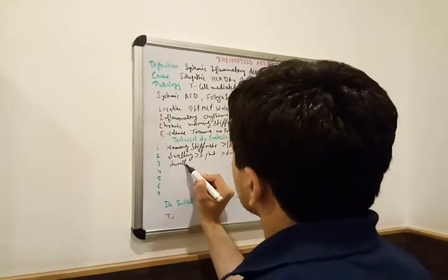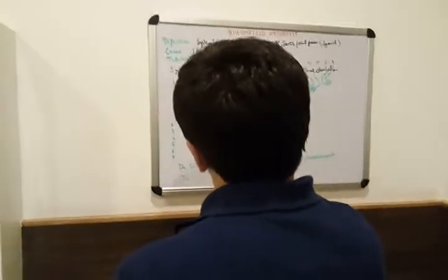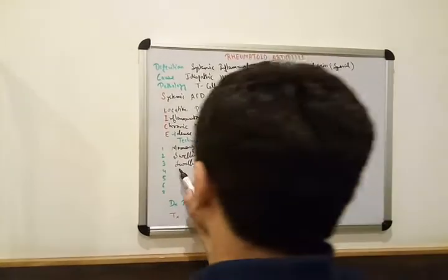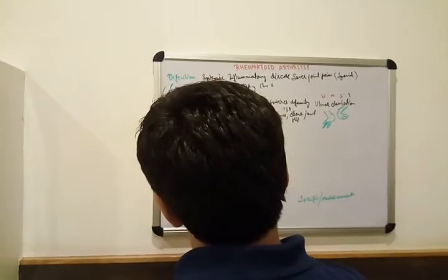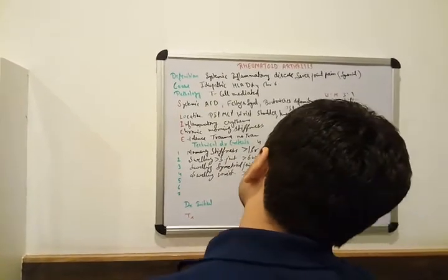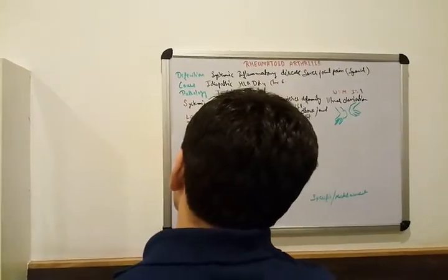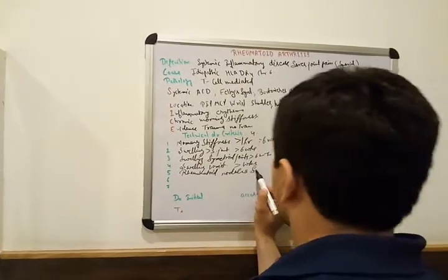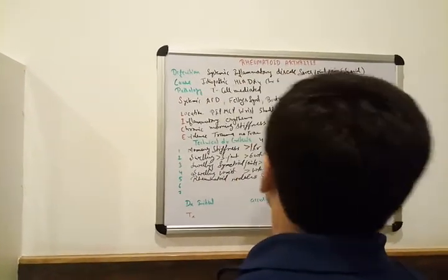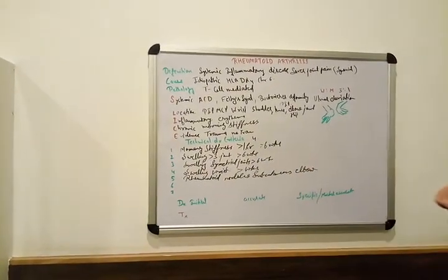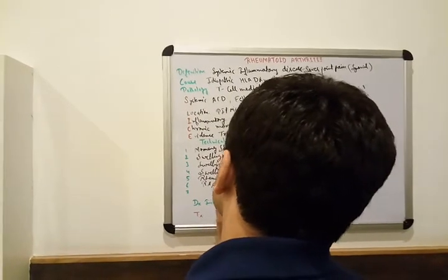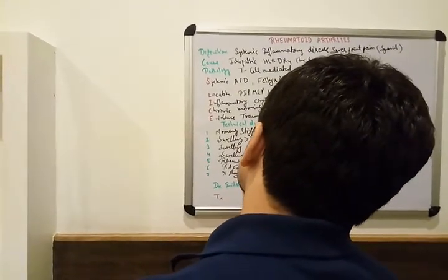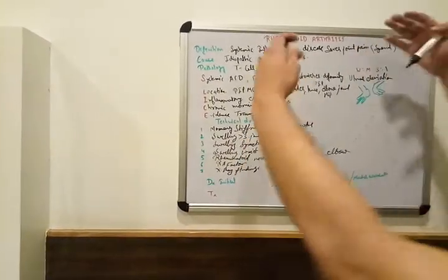Third is symmetrical joint swelling for more than six weeks. Fourth is swelling of the wrist, MCP, and PIP joints for more than six weeks. Fifth is rheumatoid nodules, found subcutaneously on the elbow — the most common site. Sixth is positive RA factor. Seventh is X-ray findings showing erosion.